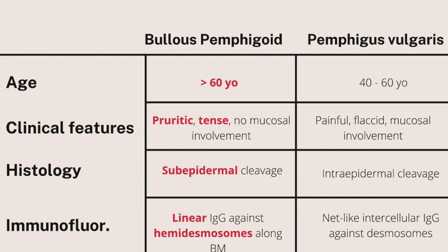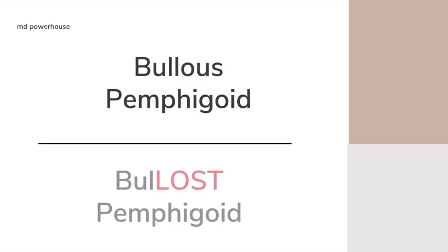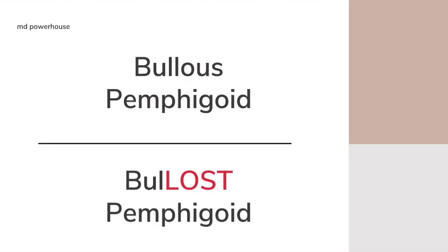So how can we remember this so that we don't get it confused with pemphigus vulgaris? For bullous pemphigoid, instead of saying 'bullous,' we're going to say 'Bollost pemphigoid.' And you can easily remember all the high-yield features with this statement: Prudence and Henry are lost.